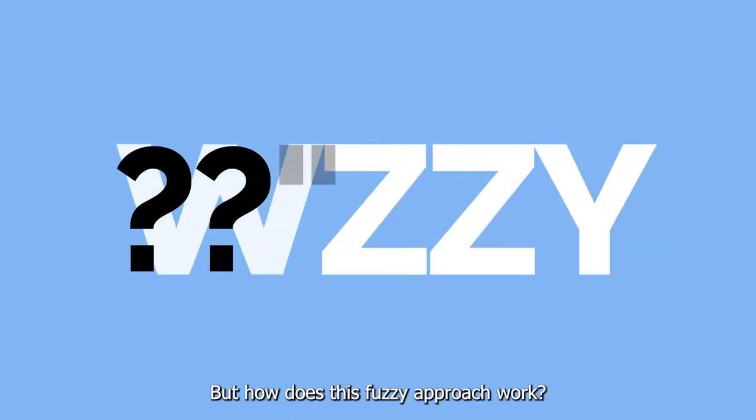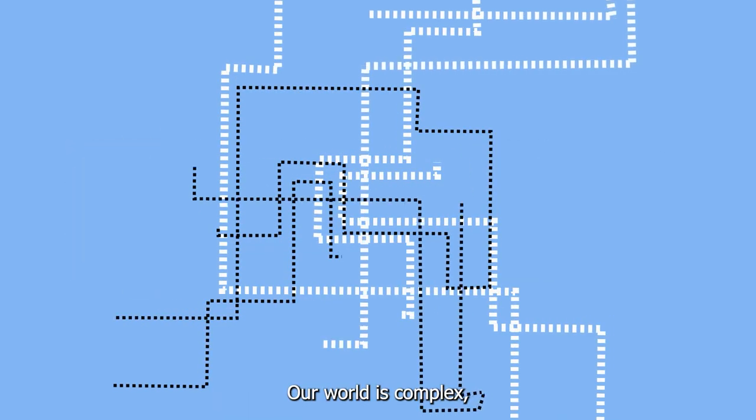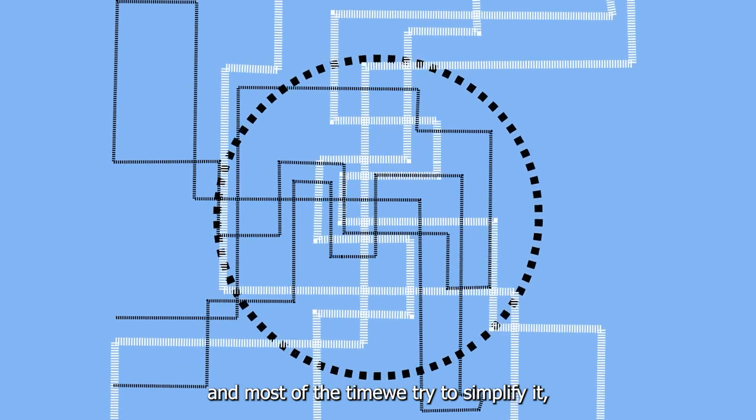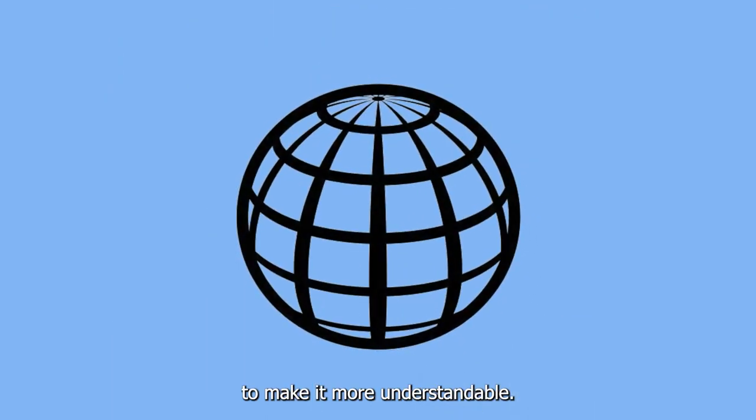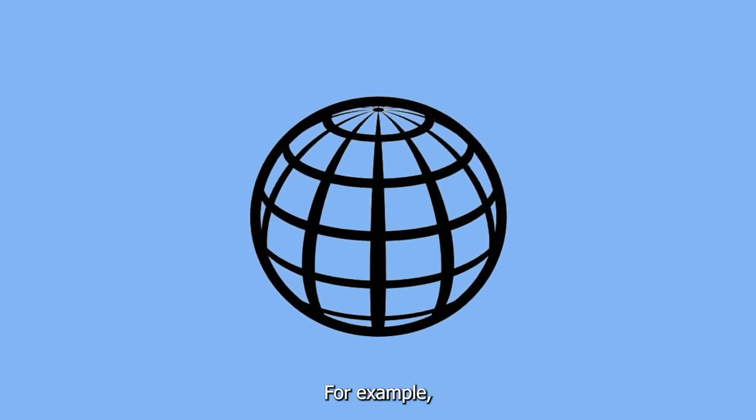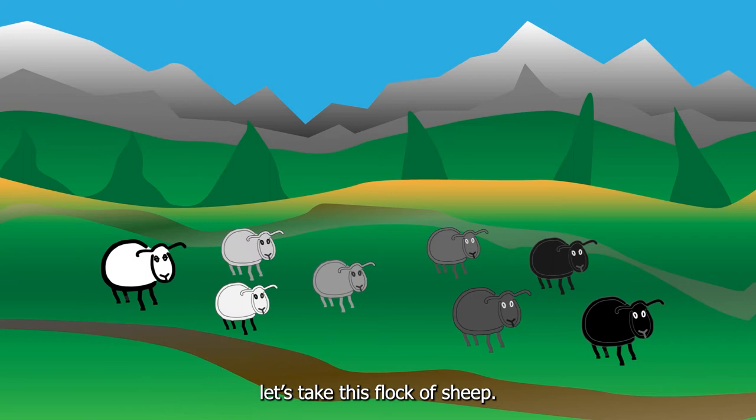Our world is complex, and most of the time we try to simplify it to make it more understandable. For example, let's take this flock of sheep. Each sheep has a different color fleece, but they can be divided into two broad groups: dark and light.